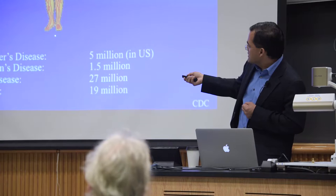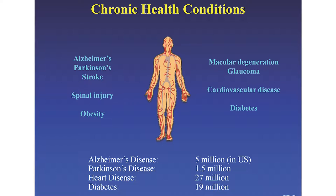Several of these diseases — Alzheimer's, Parkinson's, stroke, amyotrophic lateral sclerosis, Huntington's disease — involve the central nervous system. Our lab is really focused on central nervous system therapy. I want to talk about stem cells within the brain, within the central nervous system, for the rest of today.